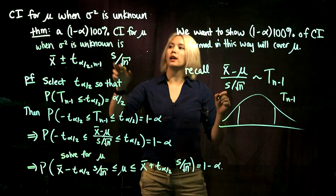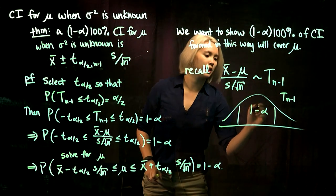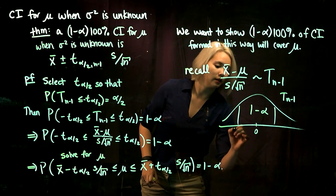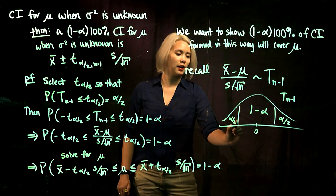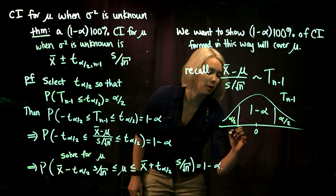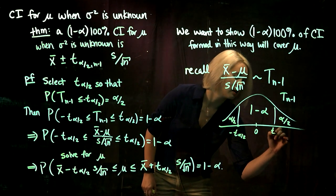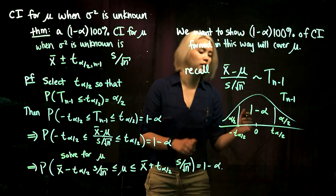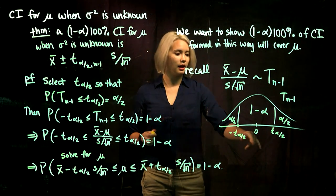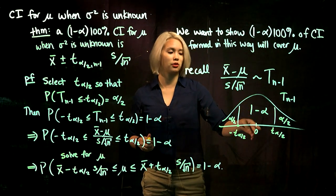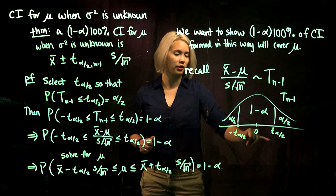So what we do is draw out this t distribution with n minus 1 degrees of freedom. Since we want a 1 minus alpha times 100% confidence interval, we put 1 minus alpha in the middle. Then we want to have alpha over 2 in each tail. So we go out and find this cutoff — maybe we call it negative t alpha over 2, and this one is positive t alpha over 2 — so that we have alpha over 2 in each one of these tails. Since the t distribution is symmetric centered at 0, it works out that they're just the positive and negative of each other.